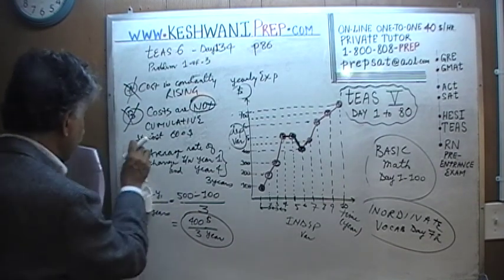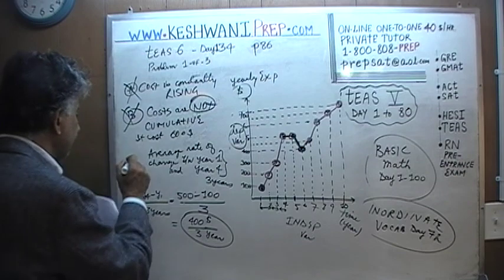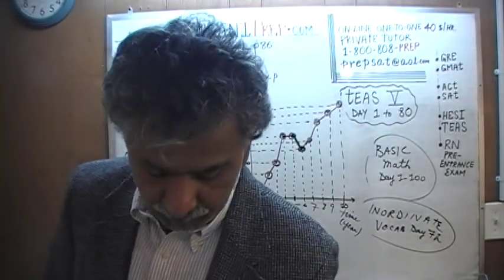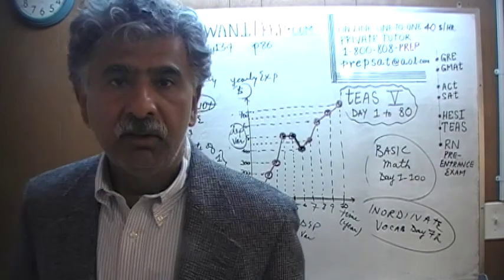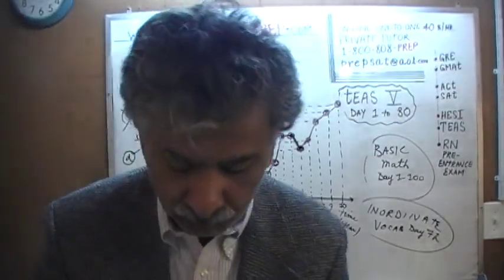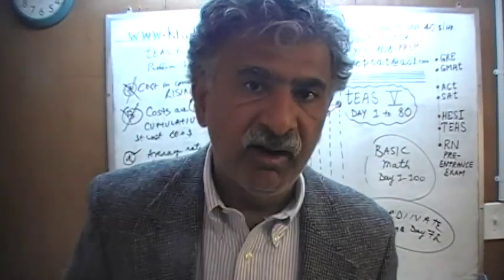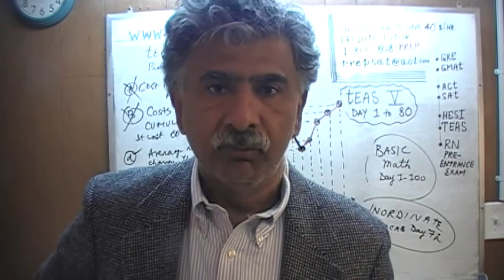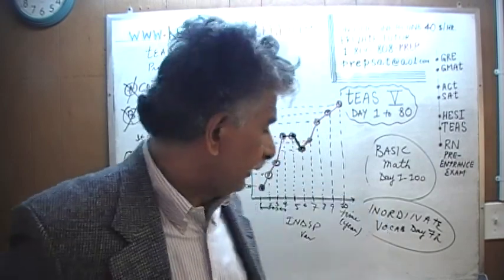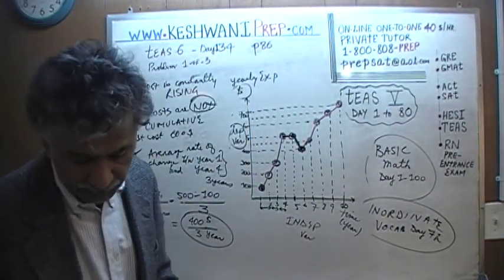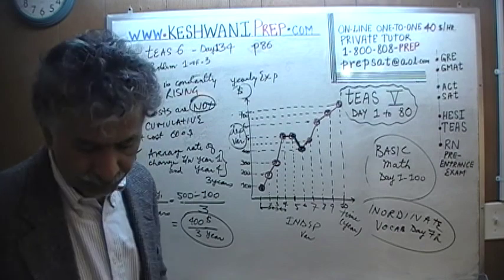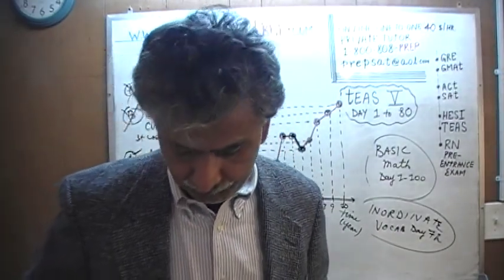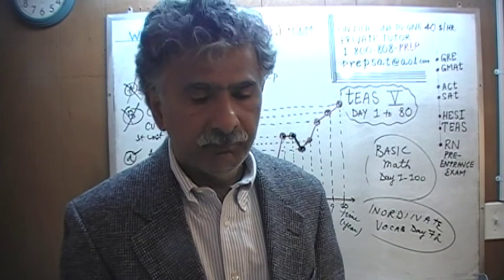The correct answer is D, because we take the cost difference between the two observations — $500 minus $100 — and divide it by three, not four. That is your correct answer: answer choice D. I'll see you tomorrow. Bye now.